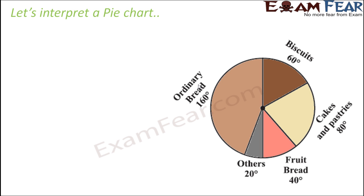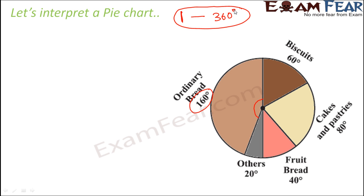Now looking at this pie chart, let us answer a few questions. For example, what fraction of the total sales is bread? The angle for bread is 160 degrees. As I have told you, angle and fraction have a close relation to each other, because one complete unit or one complete circle corresponds to 360 degrees.